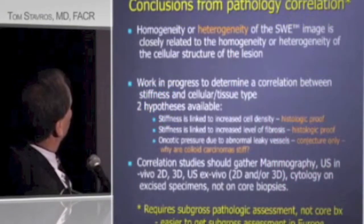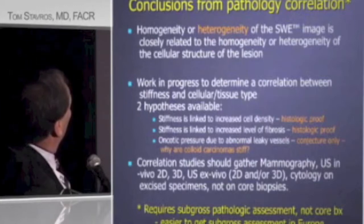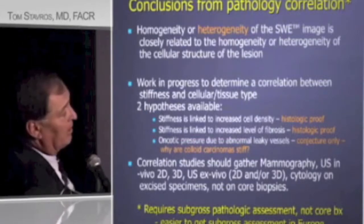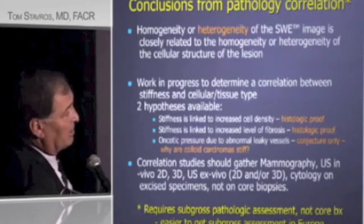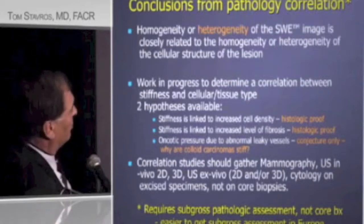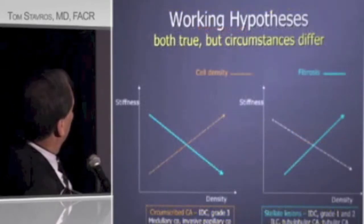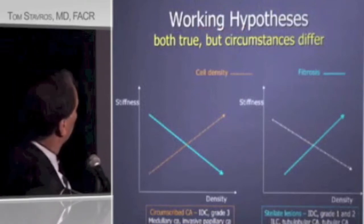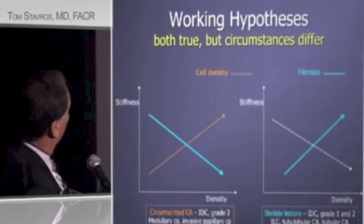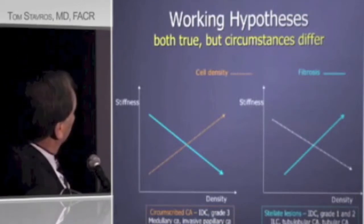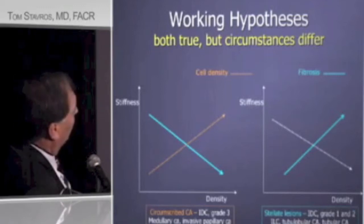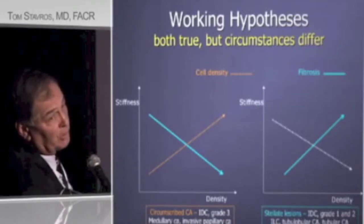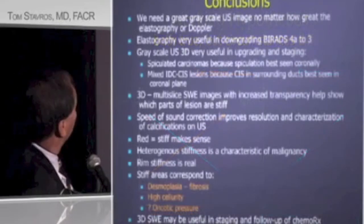In conclusion, homogeneity and heterogeneity on shear wave is closely related to the cellular structure of the lesion. The stiffness corresponds — and we now have good histologic proof — to fibroelastosis in stellate lesions and high cellularity in circumscribed lesions. Circumscribed lesions, which include grade 3 IDC, medullary carcinoma, invasive papillary carcinoma, and probably colloid, get stiffer as cell density goes up. Stellate lesions — which include grade 1 and 2 IDC, ILC, tubulolobular carcinoma, and tubular carcinoma — get stiffer as the degree of fibroelastotic response goes up.